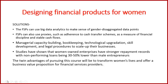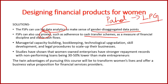Solutions include using technology like big data analytics to make sense of gender-disaggregated data points. Financial service providers can also use proxies; for example, the central government scheme Pahal provides LPG gas subsidies to accounts held in a woman's name, bringing financial discipline and stable cash flows to support women.